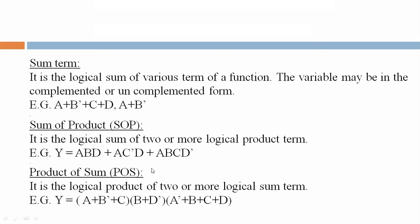Product of Sum (POS): It is the logical product of two or more logical sum terms. The bracket indicates AND operation. For example: Y equals (A plus B dash plus C) into (B plus D dash) into (A dash plus B plus C plus D).